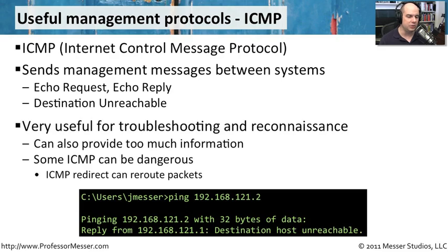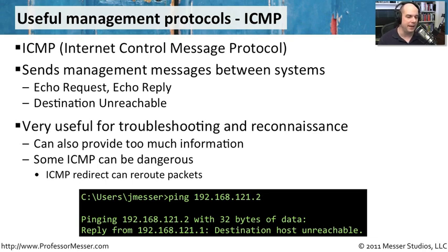This is really useful for troubleshooting, but it's also very useful for bad guys to do reconnaissance of your network. Imagine being able to ping all of the systems in a particular subnet and find out who responds back — sometimes that's not what you want. That's too much information for the bad guys. You'll notice that most firewalls, by default, are configured to disallow ICMP packets to go through.